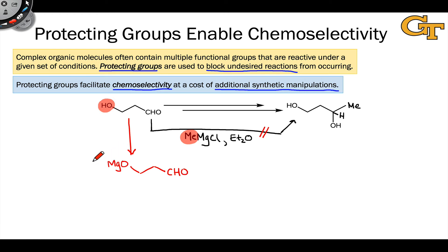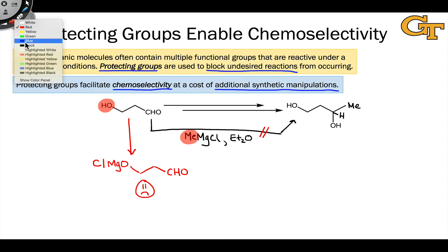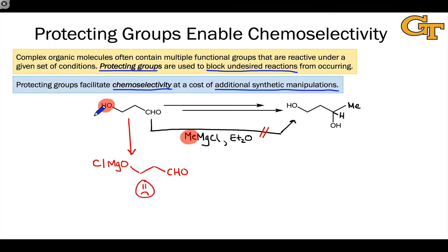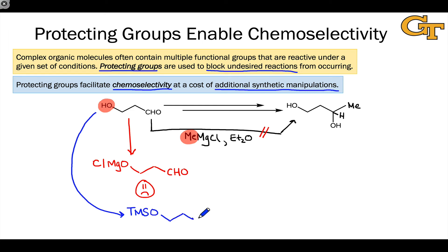Not all of our substrate would react in the desired manner — that's a problem. So to get around this issue, we can make use of a protecting group. We can use the silyl ether protecting group seen previously, converting the hydroxyl group into a silyl ether. One example is trimethylsilyl, or TMS, which removes the acidic hydroxyl proton and really leaves the aldehyde as the only electrophilic functional group left.